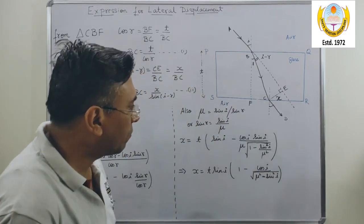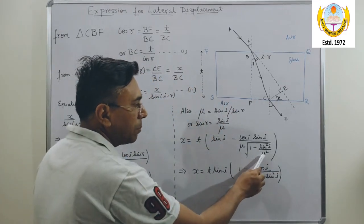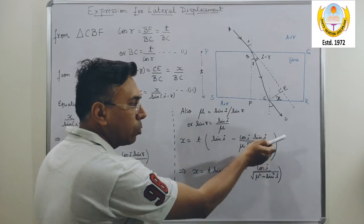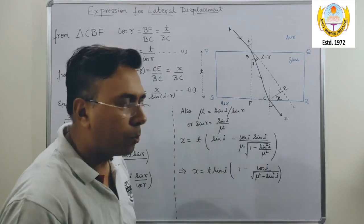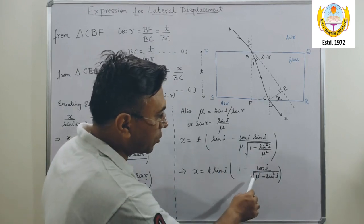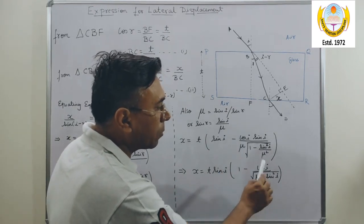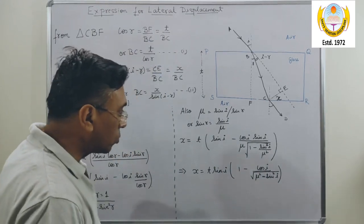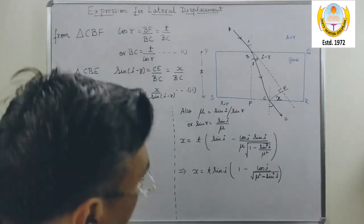We have simply did a cross multiplication, mu square out of the square root becomes mu, the mu and mu will cancel, and finally the result which you will get in the denominator is mu square minus sine square I.